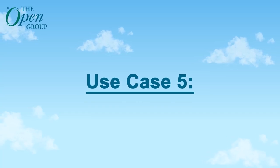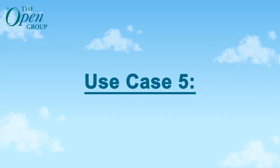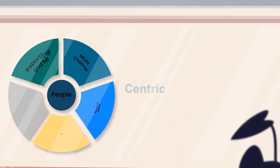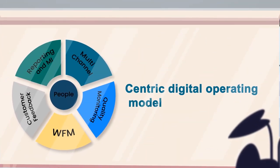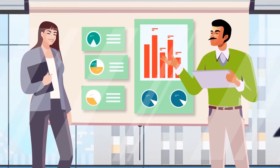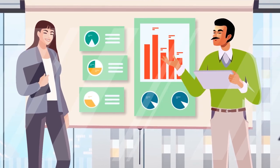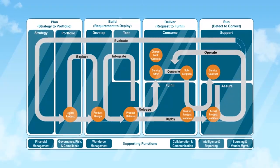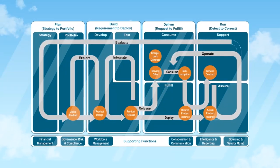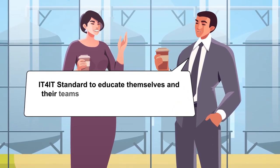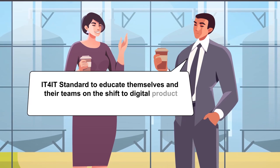Use case number five of the IT4IT standard focuses on building a product-centric digital operating model. The aim is to accelerate the implementation of a product-centric digital operating model and eliminate silos within the organization. It provides a blueprint for transforming the digital operating model through its reference architecture. Product owners can use the IT4IT standard to educate themselves and their teams on the shift to digital product management.